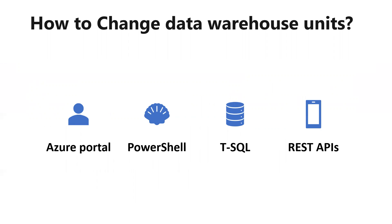How do we change Data Warehouse Units? We can change Data Warehouse Units using any of these options: Azure Portal, PowerShell, T-SQL, or REST API. In the Azure Portal, log in and go to the Synapse overview page — under Scale you can change the Data Warehouse Unit settings. In PowerShell, run the Set-AzSqlDatabase command with the database name, server name, and requested service objective name. In T-SQL, use ALTER DATABASE with MODIFY SERVICE OBJECTIVE. The REST API option also supports changing this value.